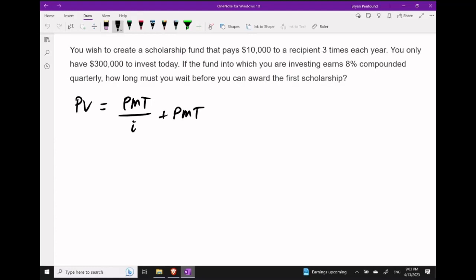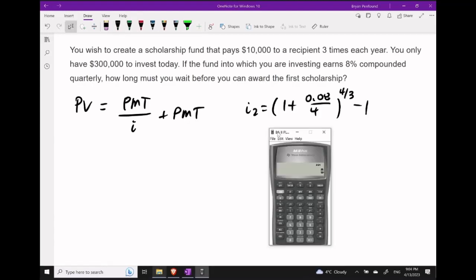However, we do have to look at our payment structure as well as our compounding structure. Here, our payment structure happens three times every year, whereas our compounding structure is quarterly. That means we are going to have to calculate i₂.